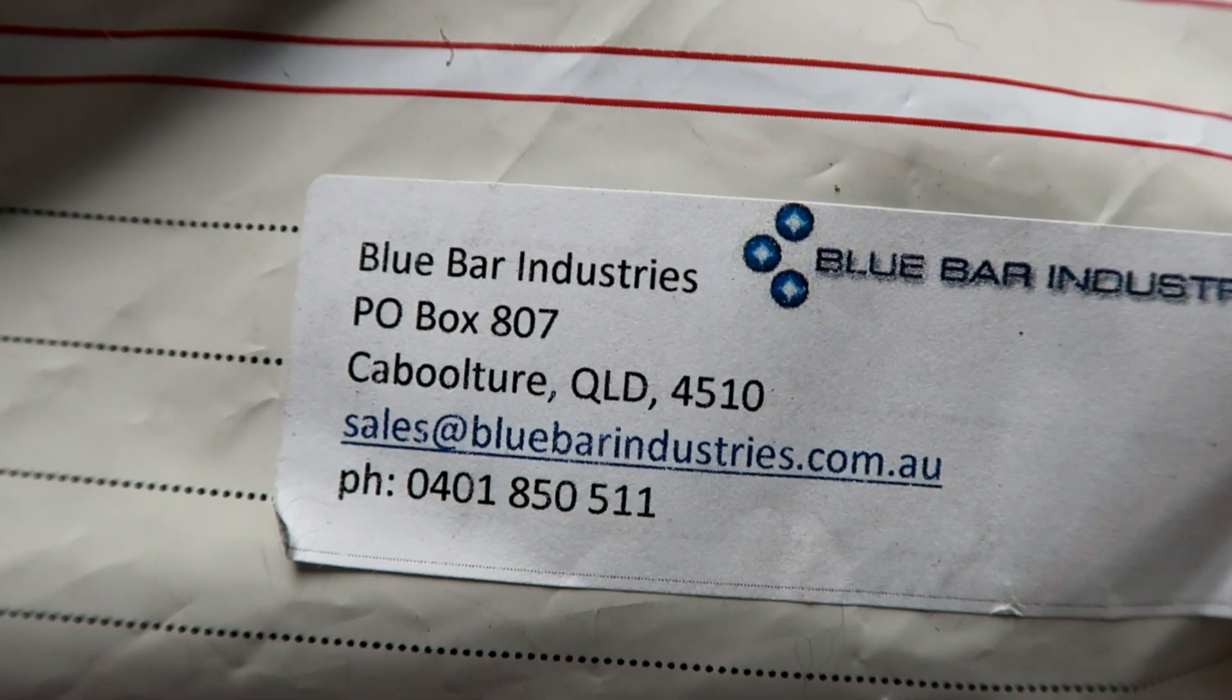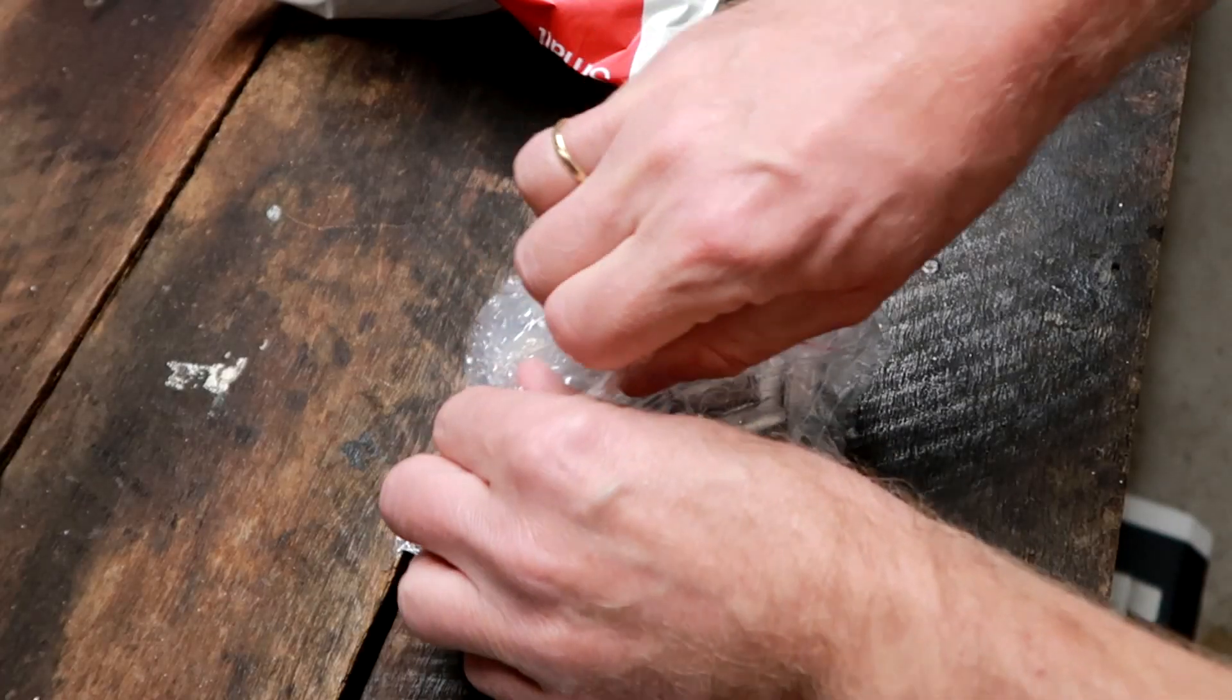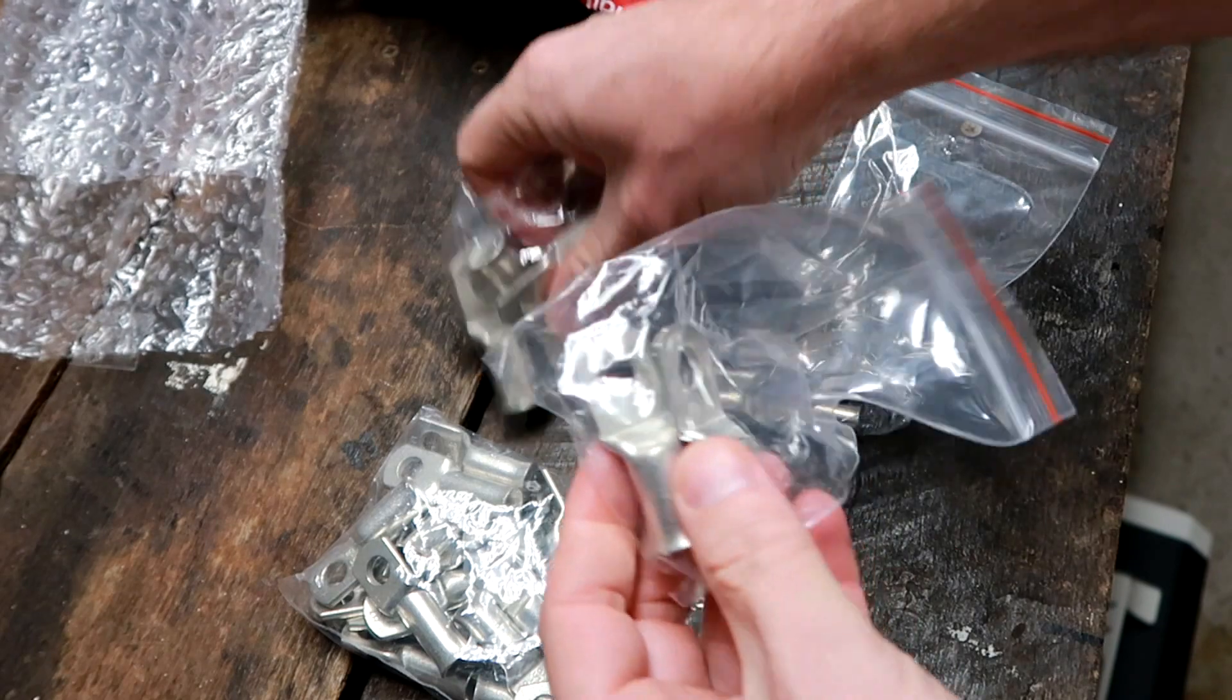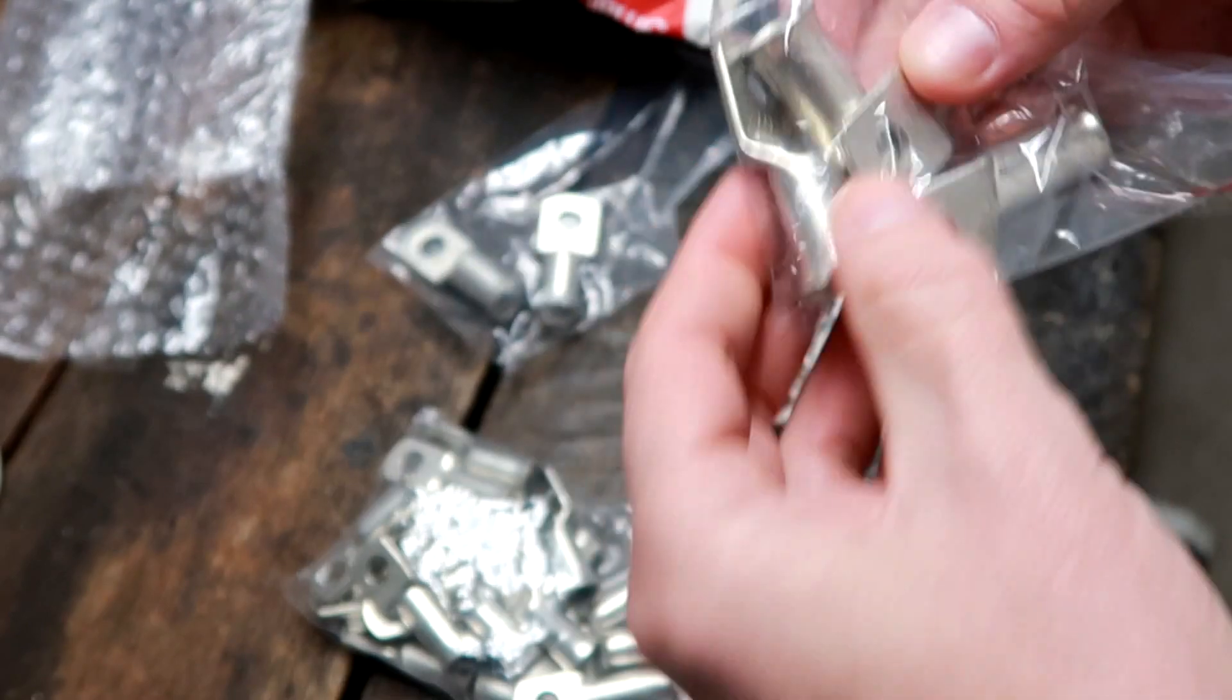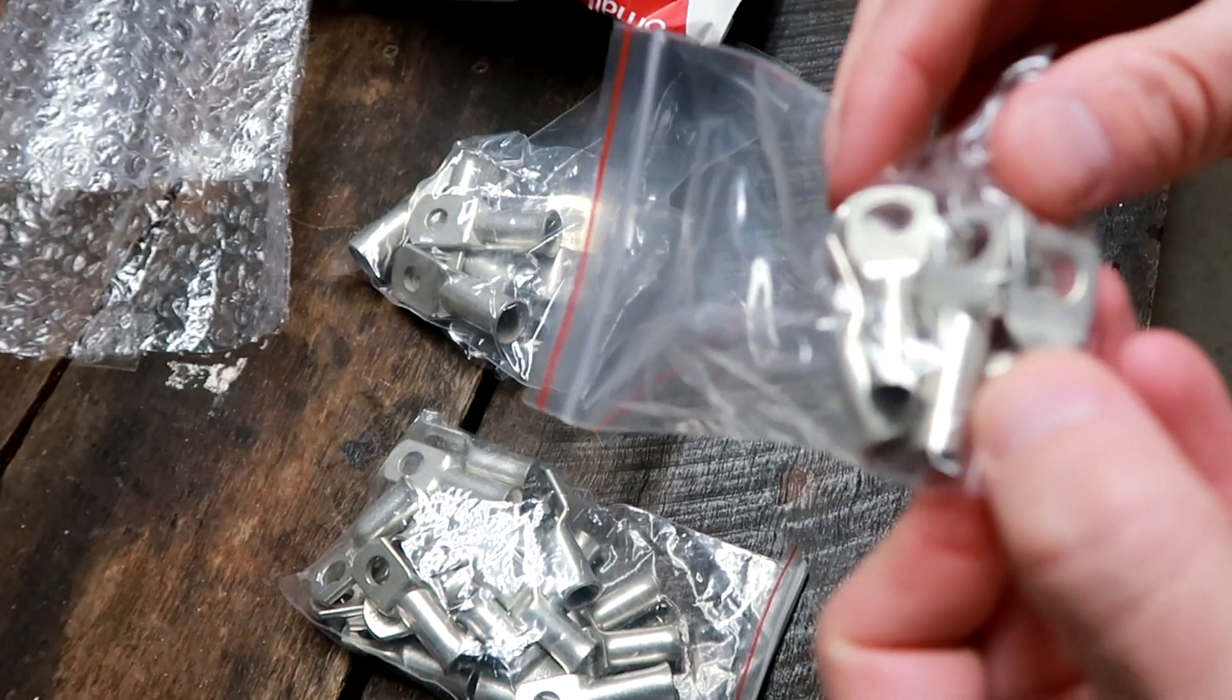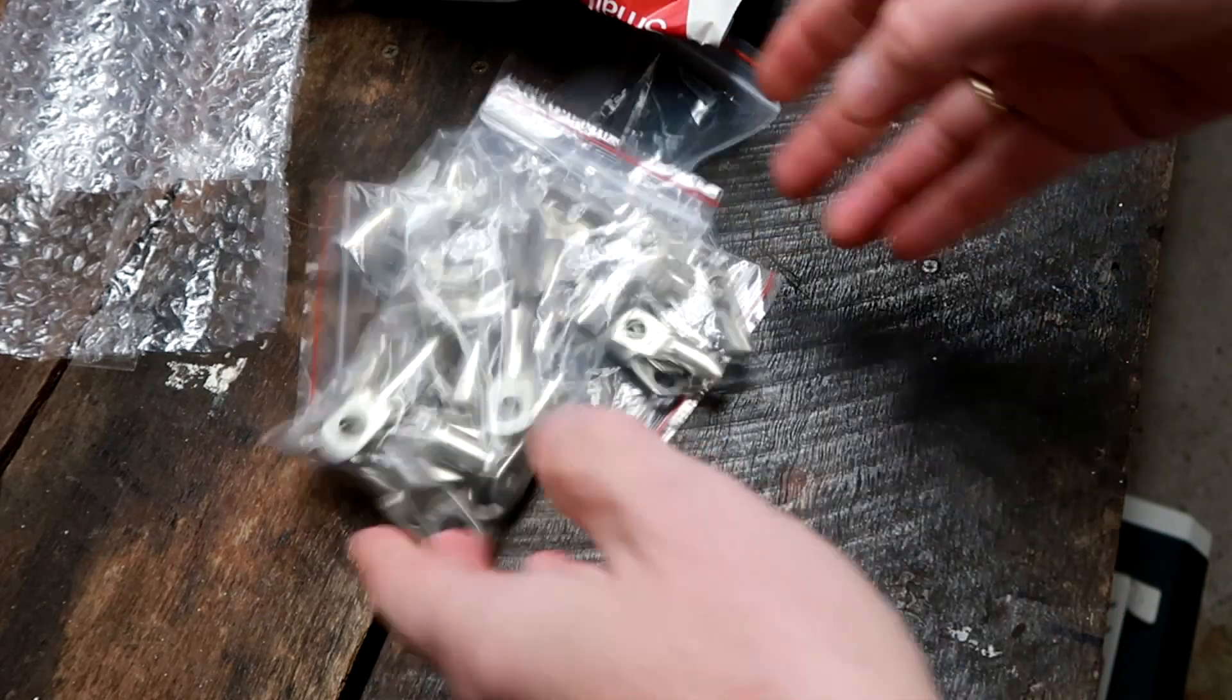Now this one is from Blue Bar Industries in Caboolture. I know what that is. Okay, nice proper cable lugs. 70 by 10, 70 by 8, 16 by 8 and 35 by 8. Well, you guys told me eight millimeters is okay, right? I shouldn't need 10. So I ordered everything in eight millimeters now.